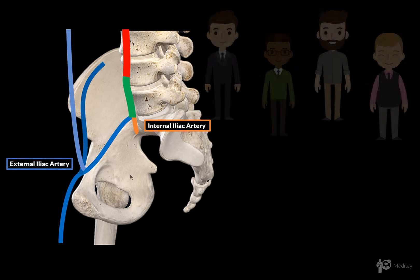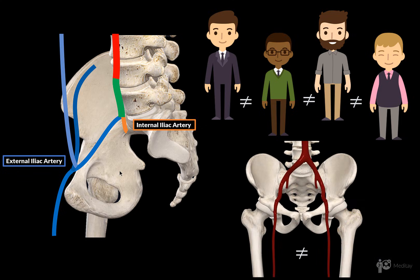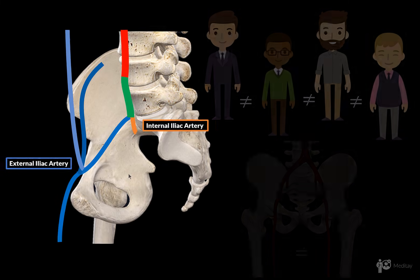The first thing to understand is that the branching pattern of the internal iliac is very variable, meaning any particular branching pattern of the internal iliac artery — whether it's from an anatomical atlas or a lecture — will probably have no bearing whatsoever on the branching pattern in the next person you encounter. Even the variation between the right and the left side in a single person can be as great as among different people. So instead of focusing on the branching sequence, concentrate on matching the arteries to their target, which I will try to show you in this video. It will be much easier to remember the branches of this artery.